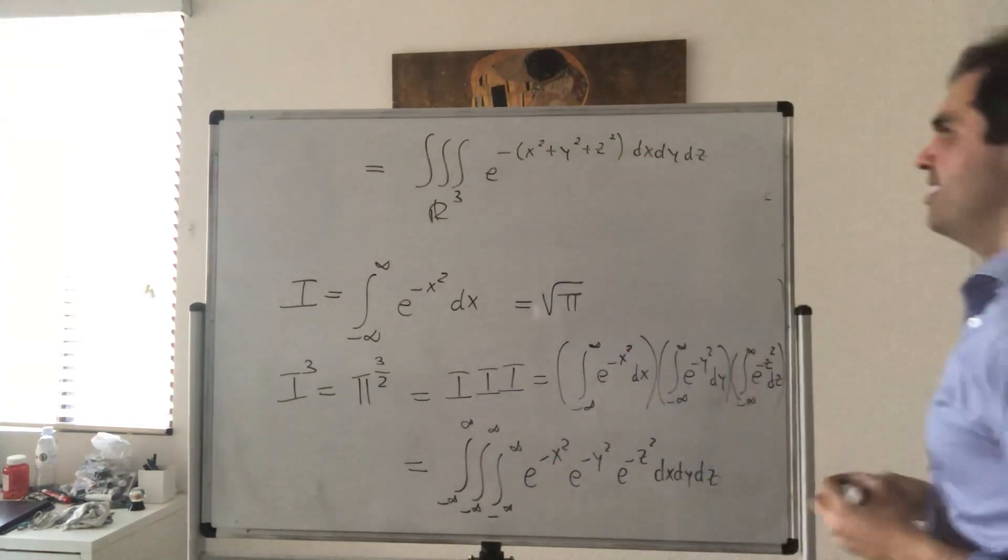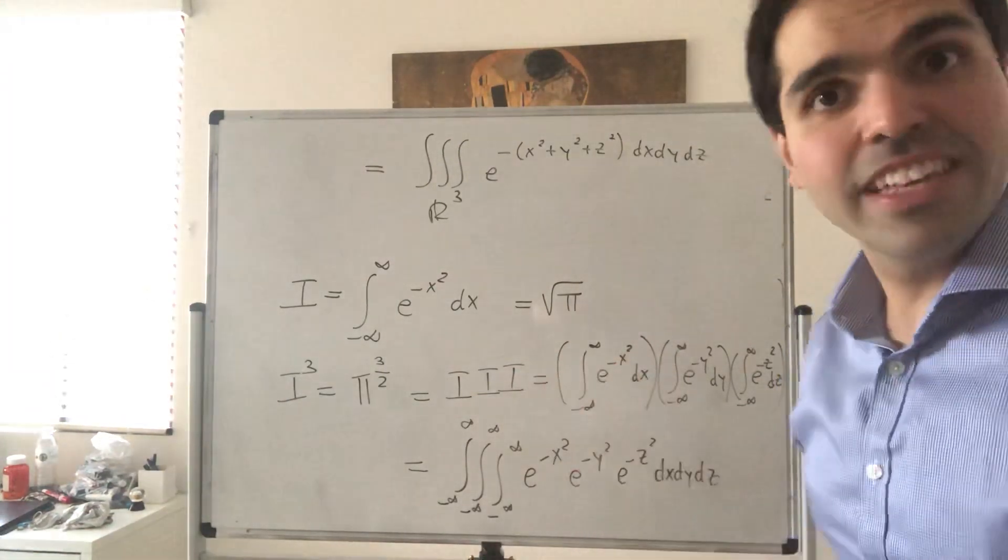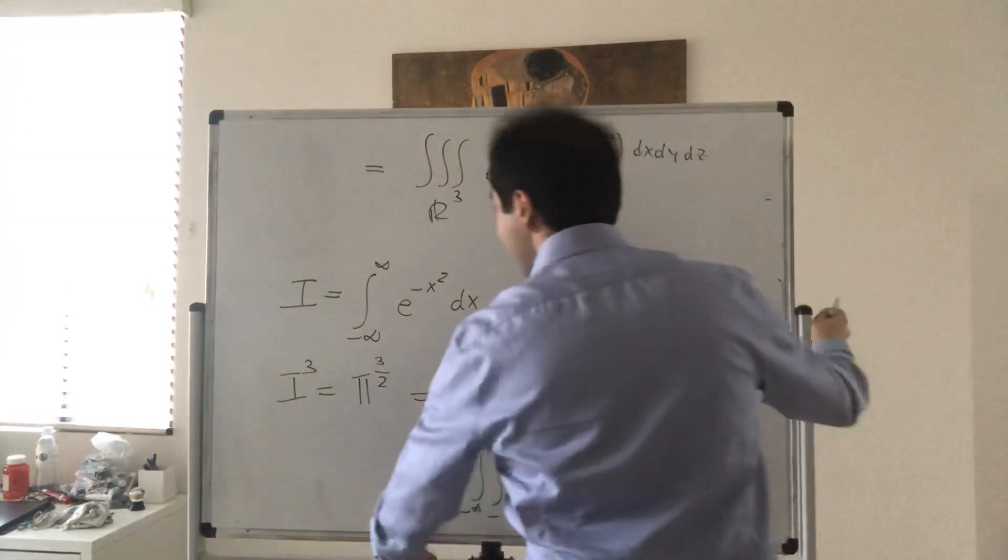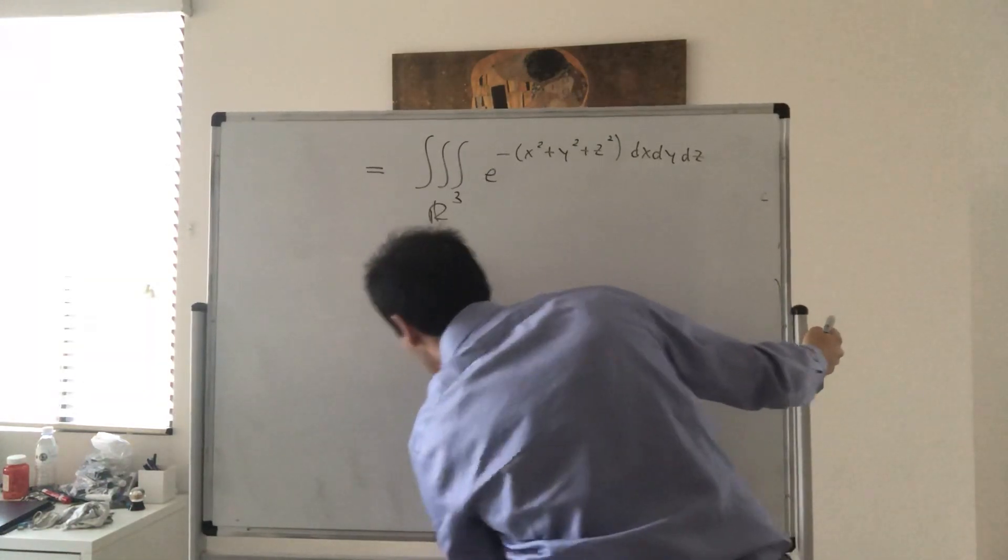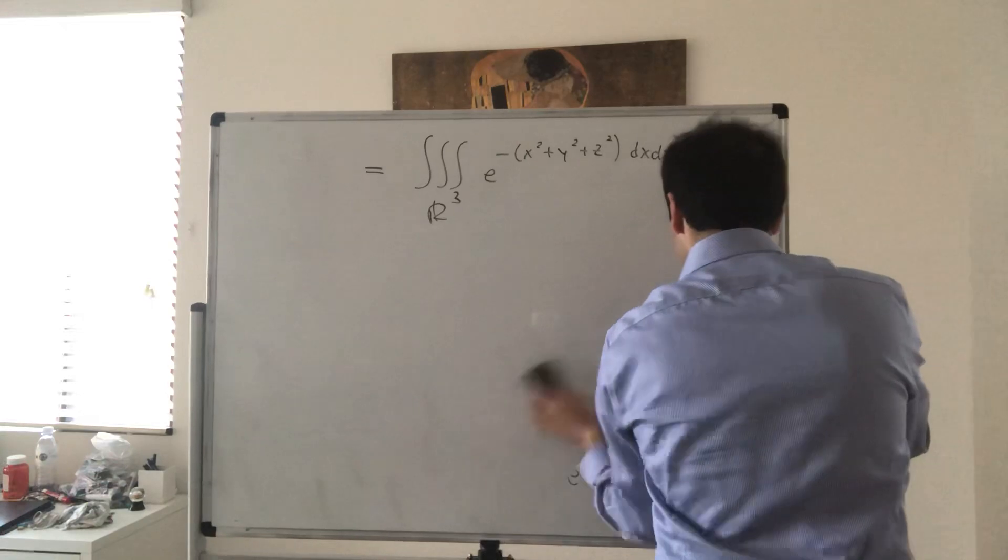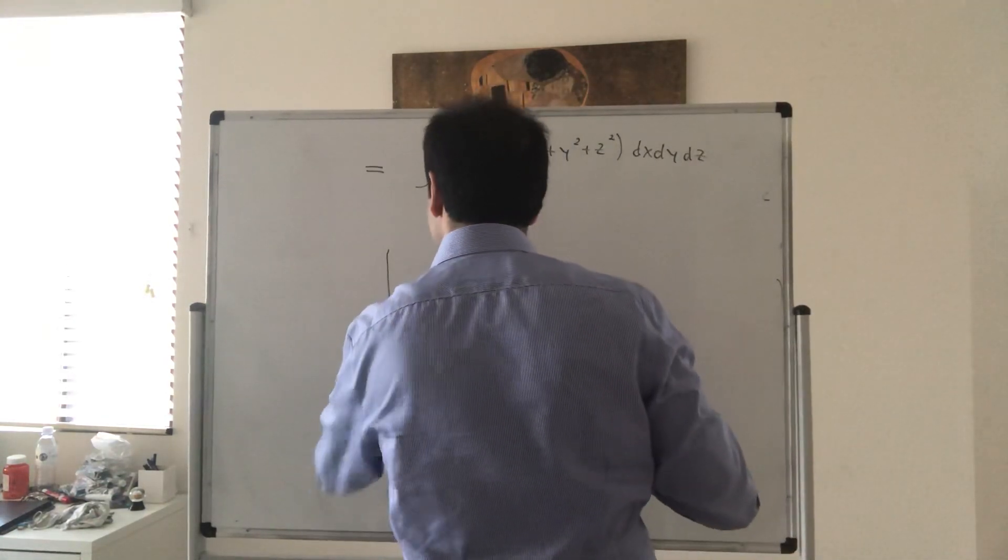Well, and if you see x squared plus y squared plus z squared, just think spherical coordinates. So now the question is, how can you represent r3 in terms of spherical coordinates? Well, not too bad.